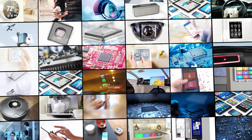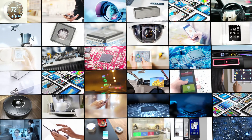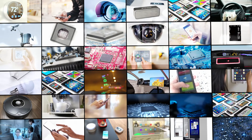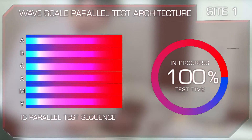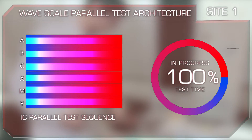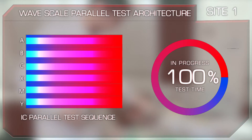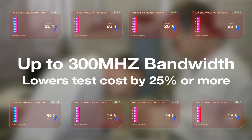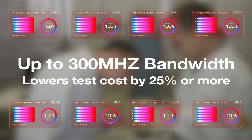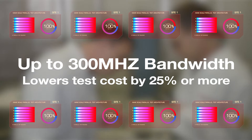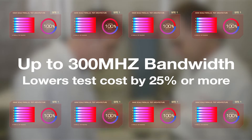With the V93000 Wavescale MX, you can achieve true parallel test for many mixed signal applications with completely independent instruments, up to 300 megahertz bandwidth and lower test costs by 25 percent or more.